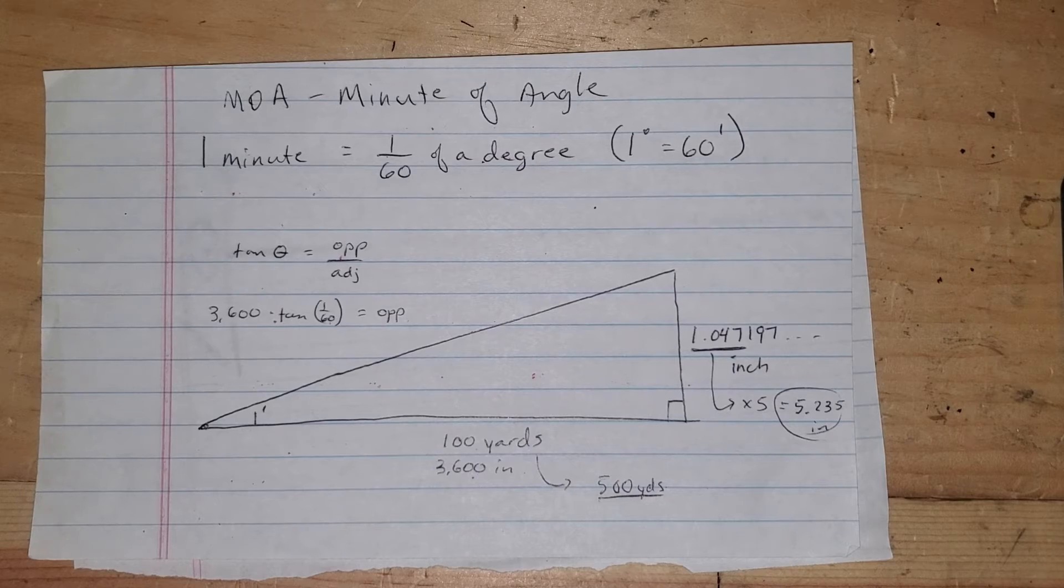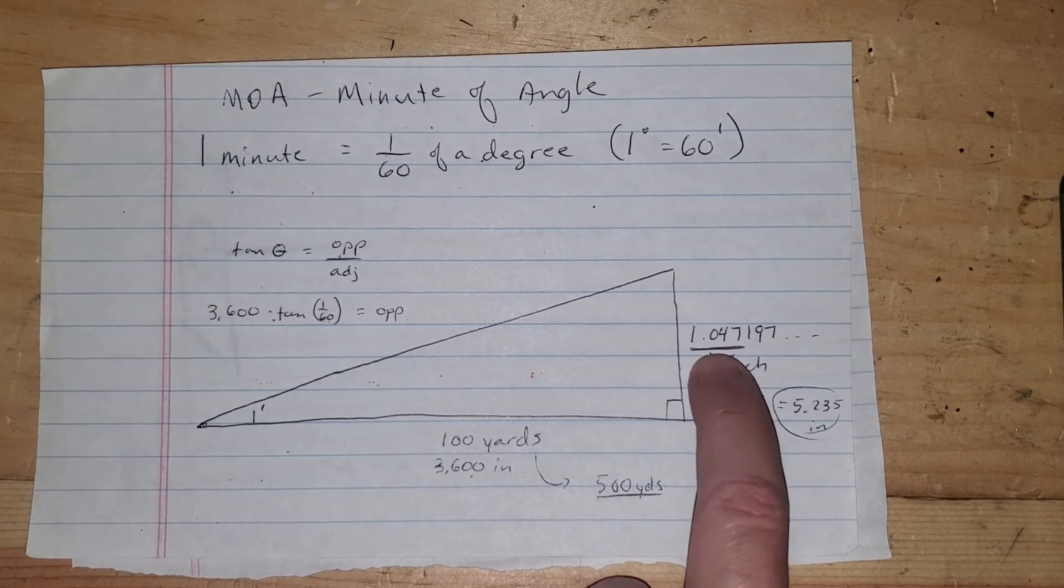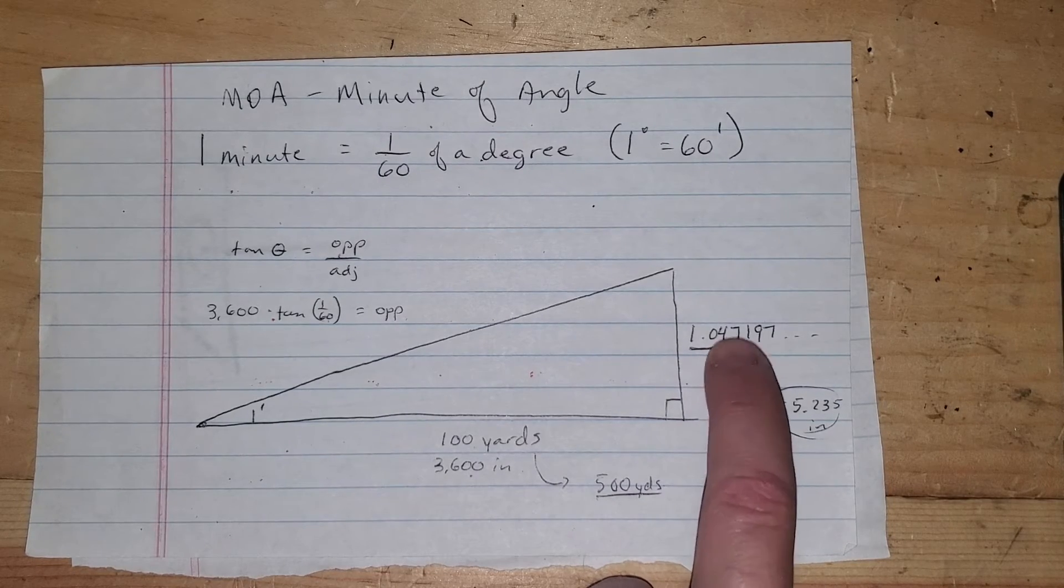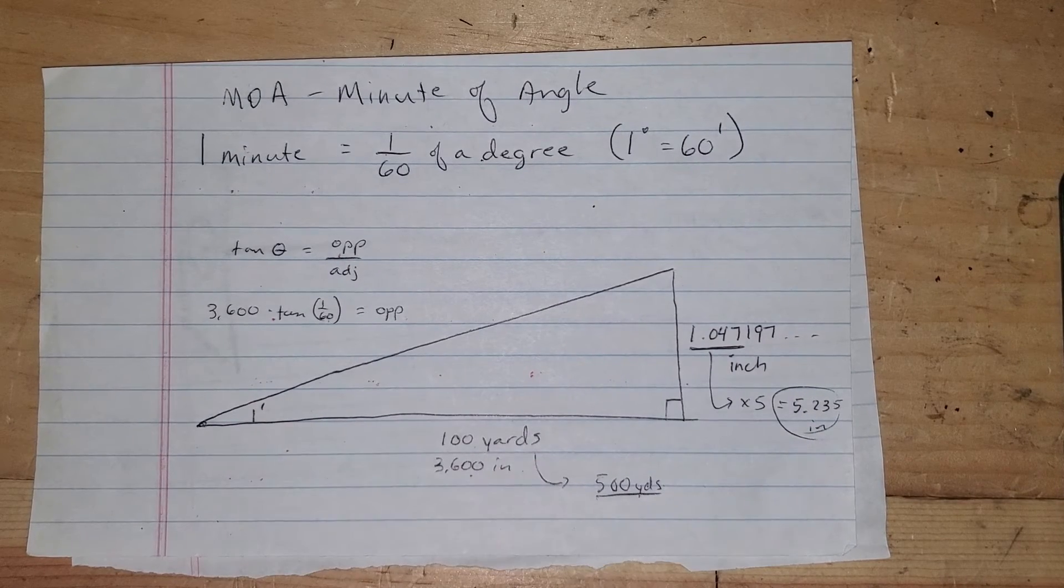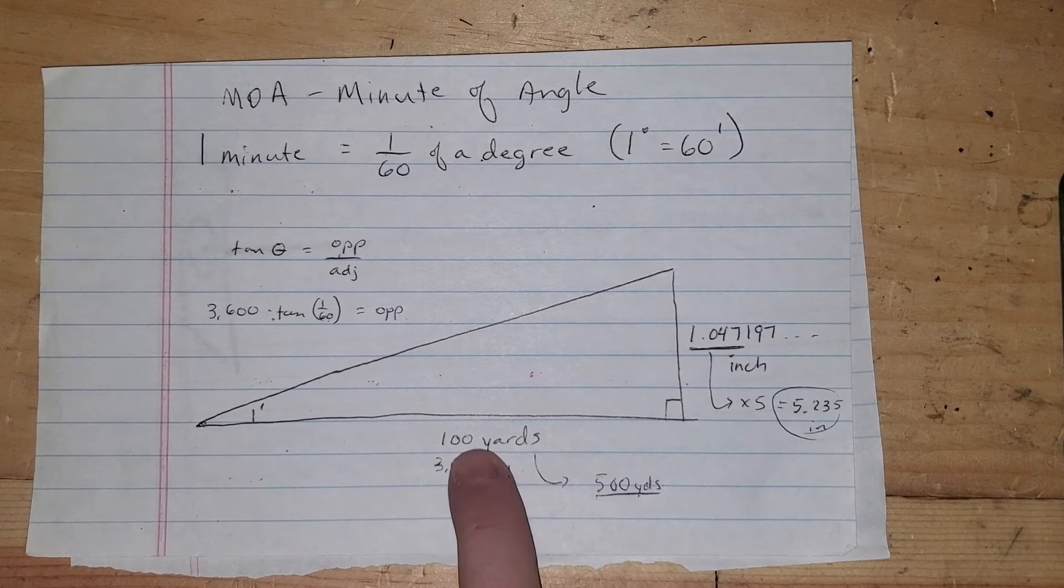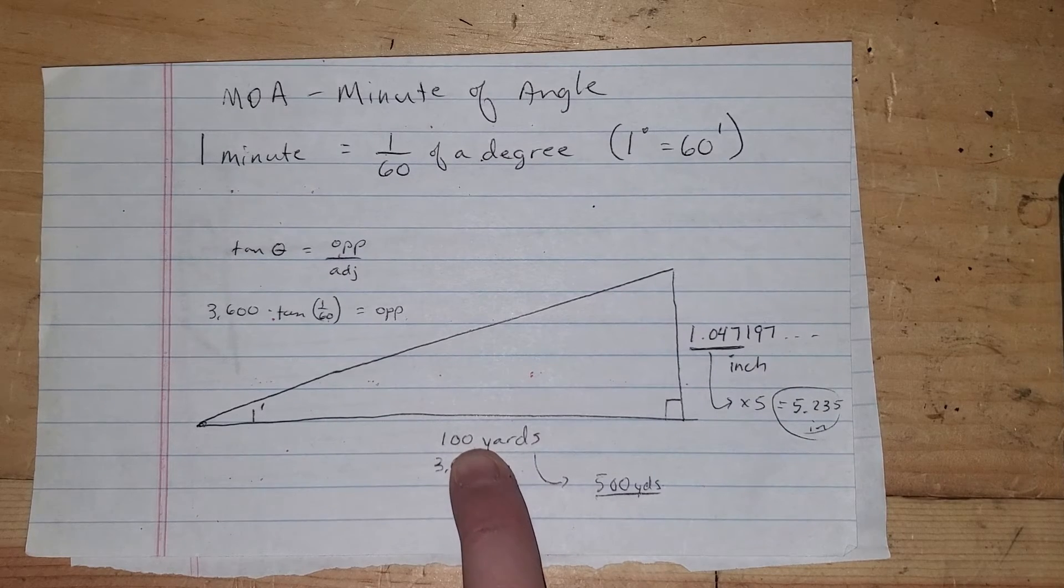So it's kind of an interesting thing and if you want to, you can kind of hang on to that number there, that 1.047 MOA, that 1.047 inches is equal to 1 MOA at 100 yards and whatever multiplier you add to this.